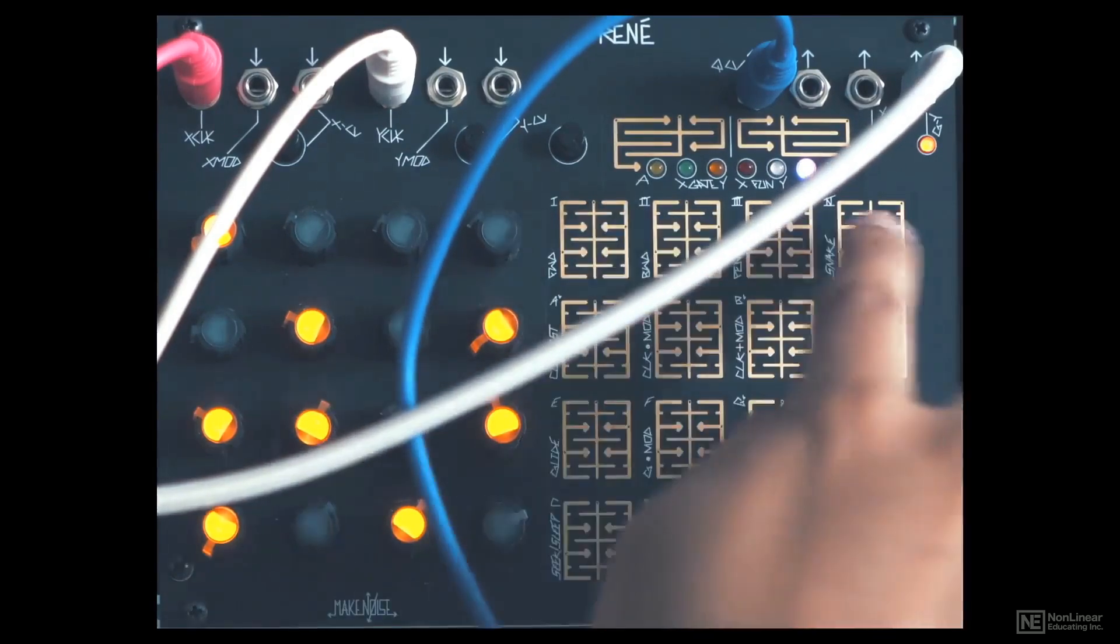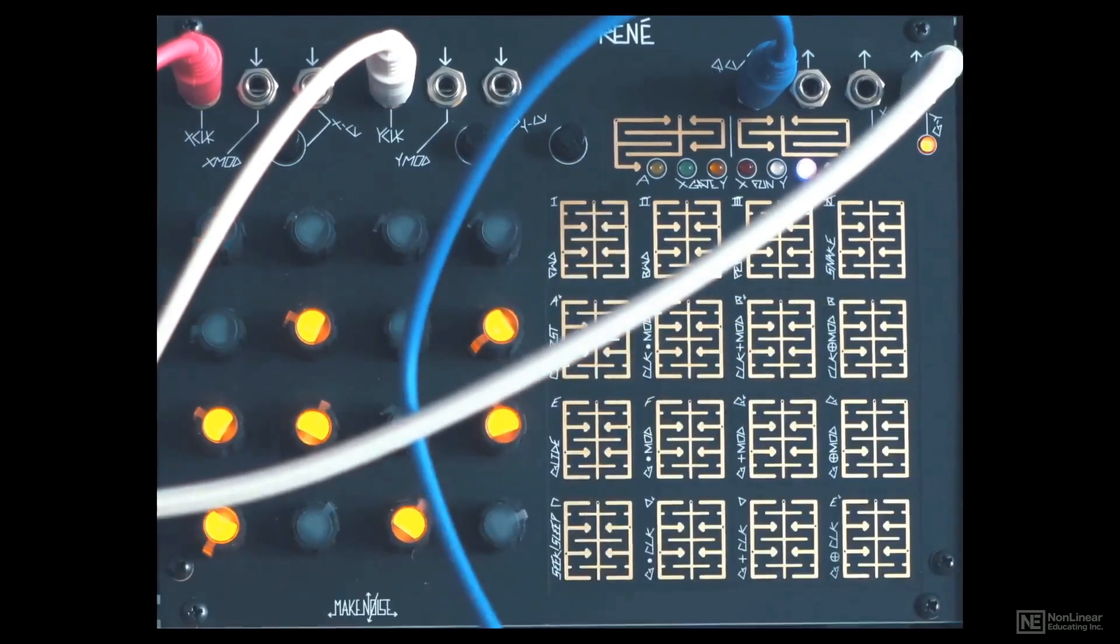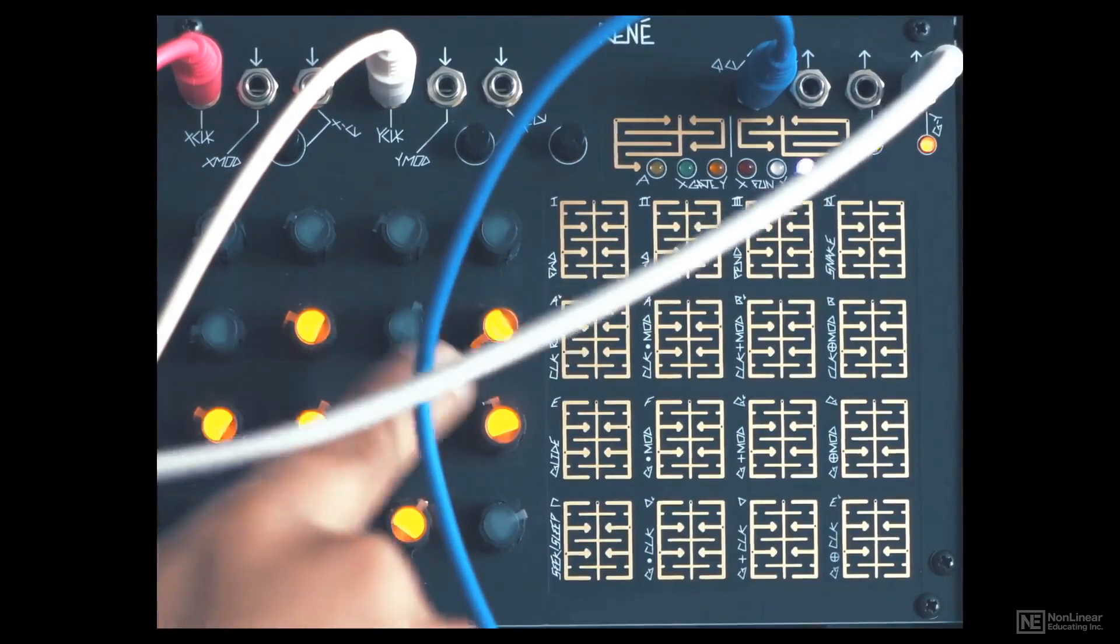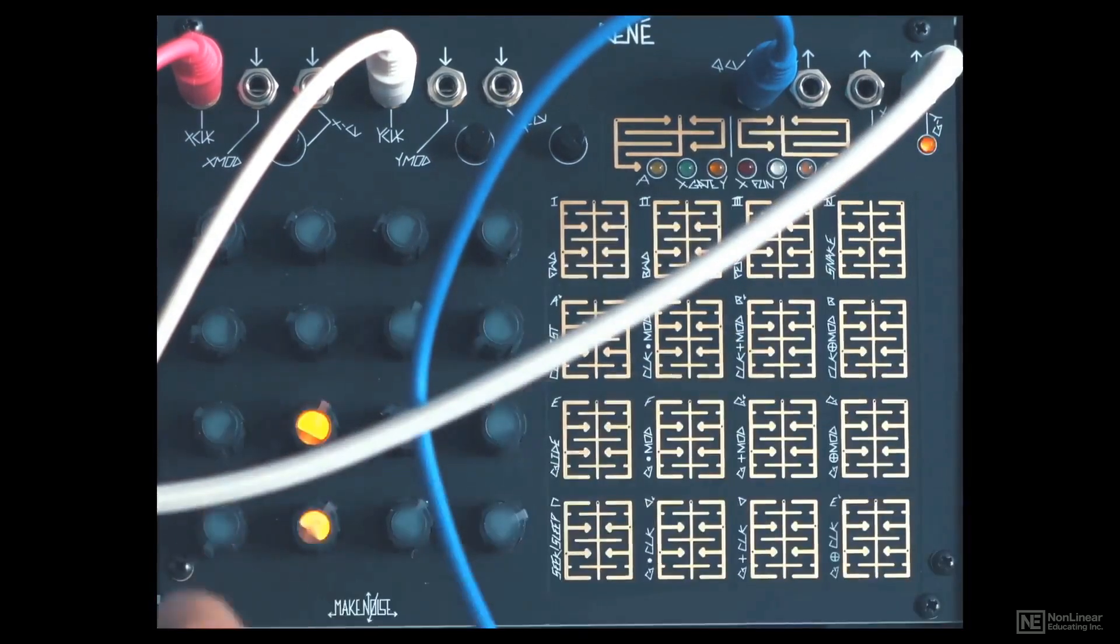Now like I said, we have four slots here to save scale presets. I'm using the first one, but I can also turn it off. So now we're back to using what's set here. So that's the scale quantized feature built into the Rene.